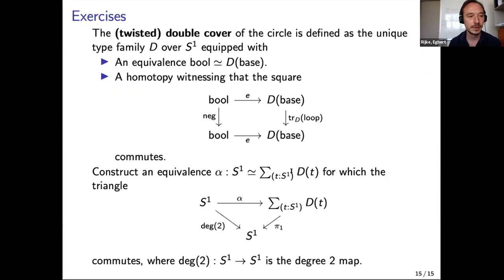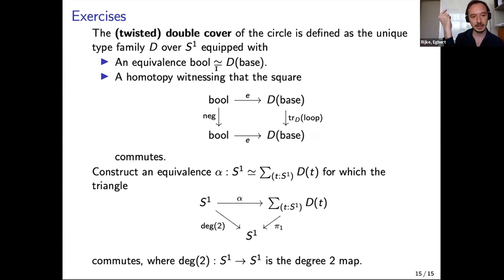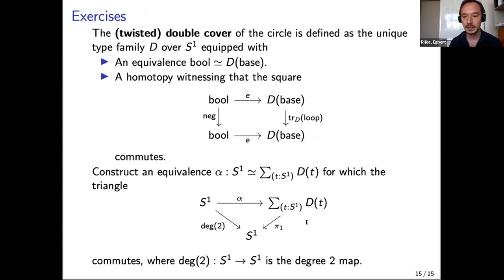For the exercise session, we'll look at the twisted double cover, which lets you practice with families over S¹. Instead of the helix, it goes around once and returns to the first point. You can then show the total space is S¹, though this is likely more work than fits in the exercise session and is more like homework — but it's good to get your hands on it.